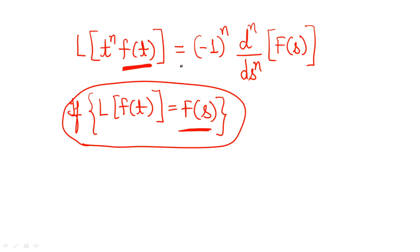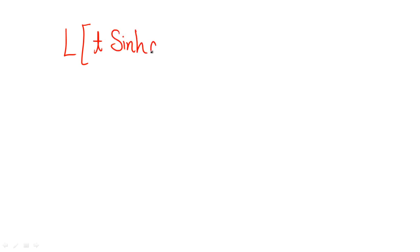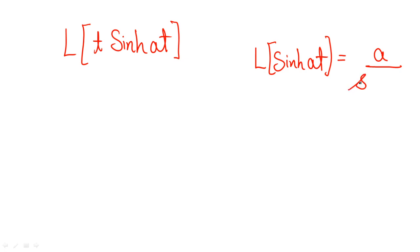If t to the power n is present and any function has been multiplied with it, the answer will be minus one to the power n, times d^n over ds^n of F(s). Now for the Laplace transform of t times sinh(at): sinh(at) is a function for which we already know the Laplace transform, and that is a over s squared minus a squared. If you don't know it, you need to memorize this expression. You can check the previous videos on this channel for the important formulae.